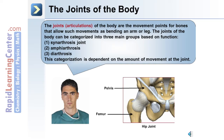The joints of the body can be categorized into three main groups based on their function: 1. Synarthrosis joints, 2. Amphiarthrosis, and 3. Diarthrosis joints. This categorization is dependent on the amount of movement permitted at the particular joint.